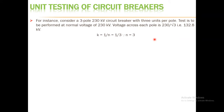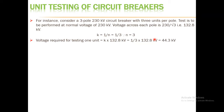We know that the voltage to be applied must be reduced by a factor K. K equals 1/N = 1/3, since N equals 3. So the voltage required for testing one unit is K × 132.8 kV, which is one-third of 132.8 kV, giving 44.3 kV. This is the voltage needed to apply to one pole of the circuit breaker during the unit test.